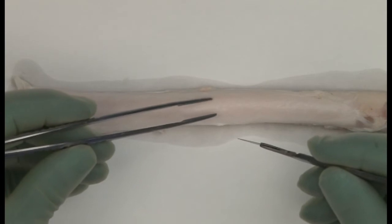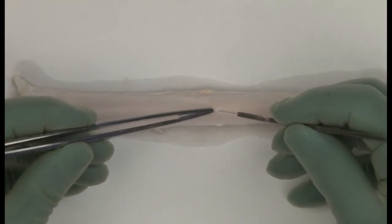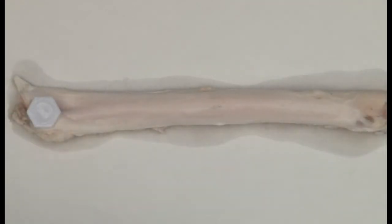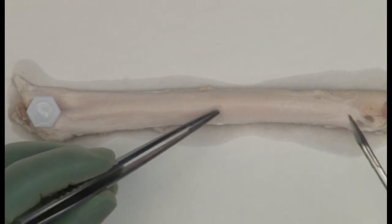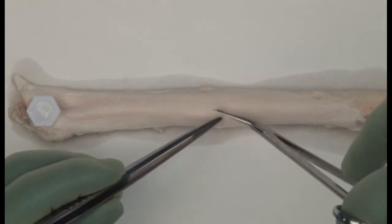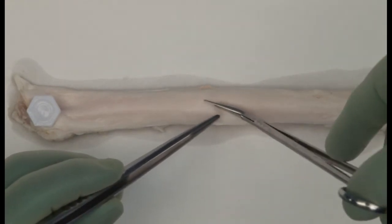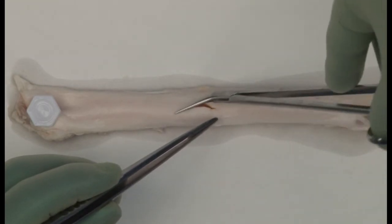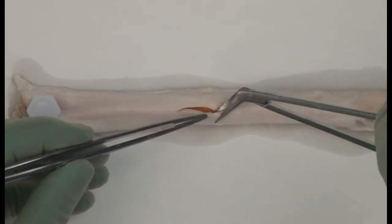A vein patch is the safest way to close an arteriotomy if there is the slightest risk that direct closure will produce narrowing. Start by lifting the adventitia of the artery, then with the blade pointing away from you, use a short stabbing motion with the scalpel. Make an elliptical arteriotomy about 3 cm long.